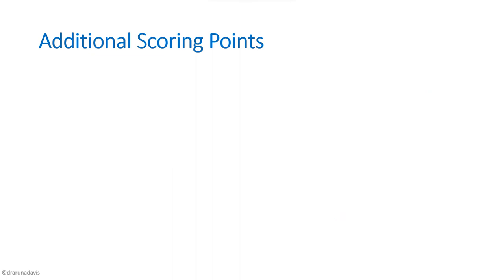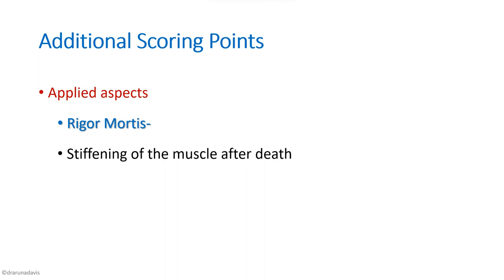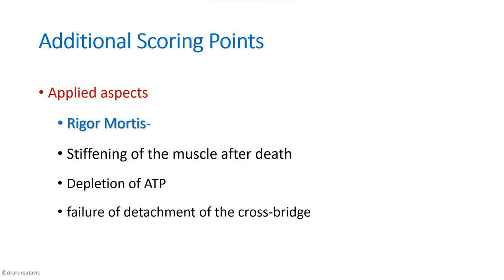For additional exam scoring points, you can also write about applied aspects like rigor mortis. Rigor mortis is stiffening of muscles after death, because after death there is depletion of ATP. For detachment of myosin from the cross-bridge, ATP must bind to the myosin head, and since ATP is depleted, this cannot occur. Thus there is failure of detachment of the cross-bridge, causing sustained contraction or stiffening of muscles after death.